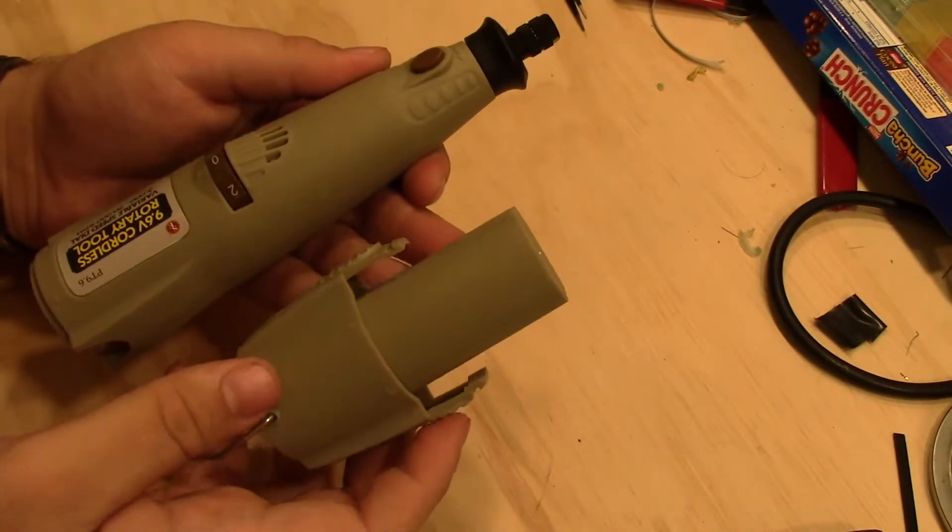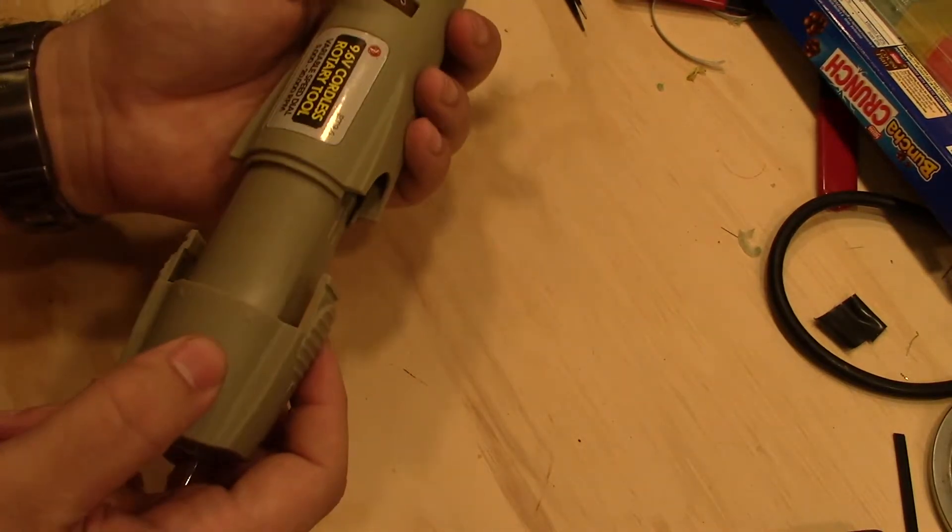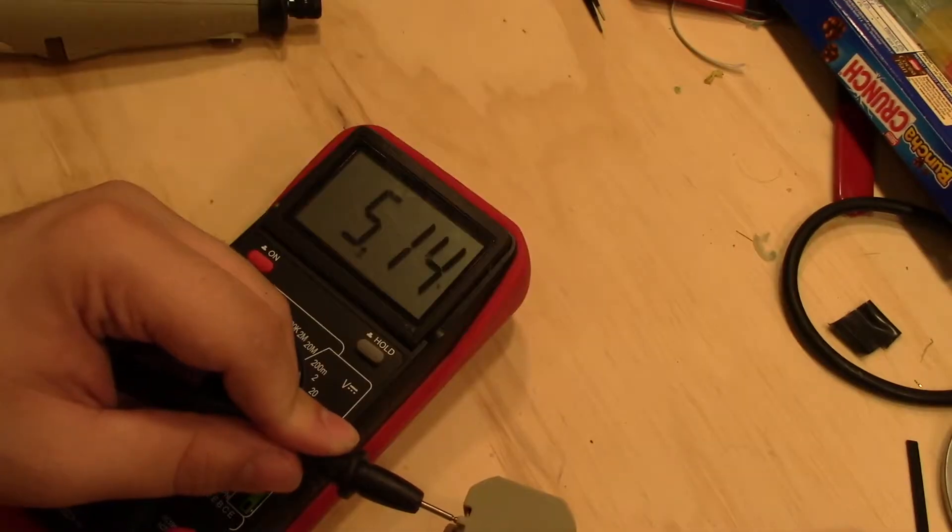I'll be using two 18650 cells in series to come as close as I can to the labeled 9.6 volts. After a few hours of charging you can see that the battery is so dead it can barely cut cardboard.